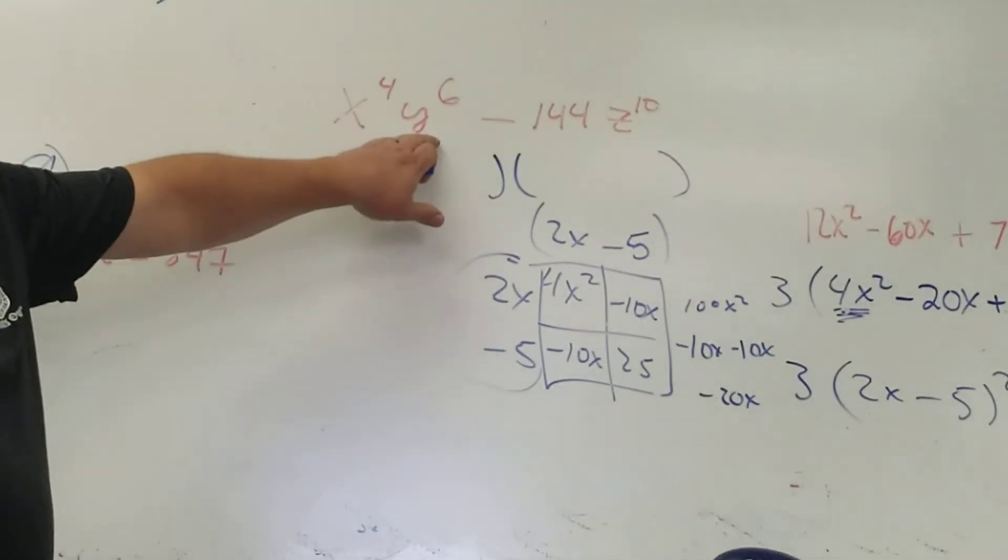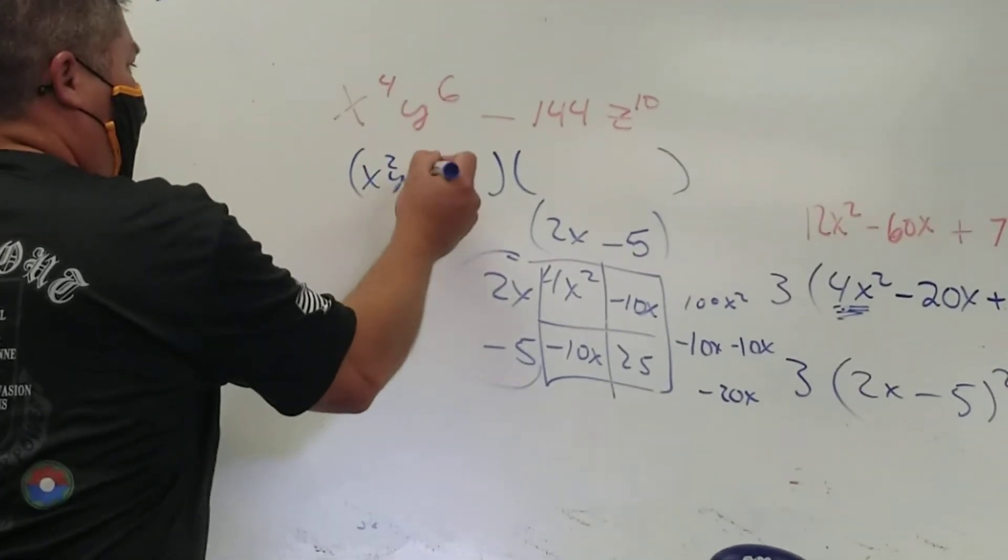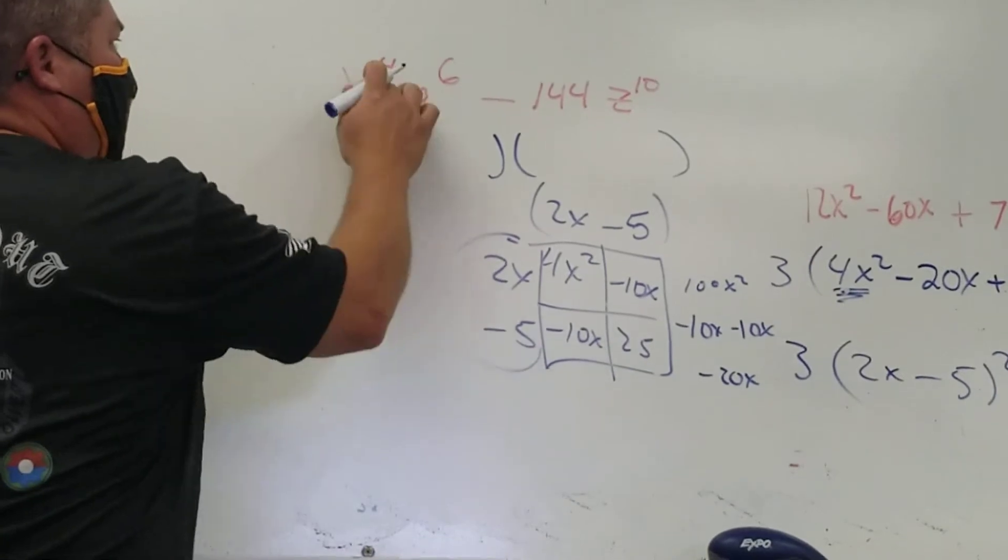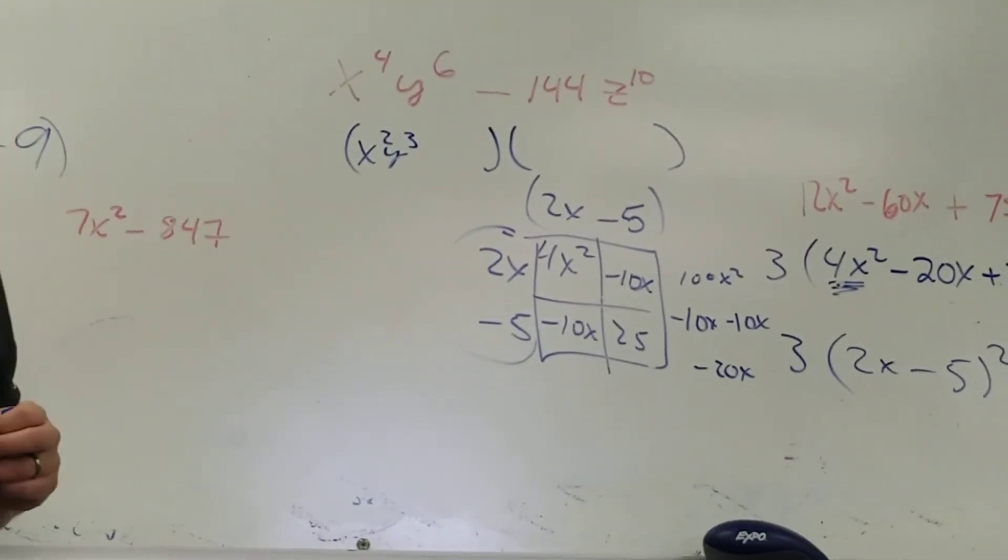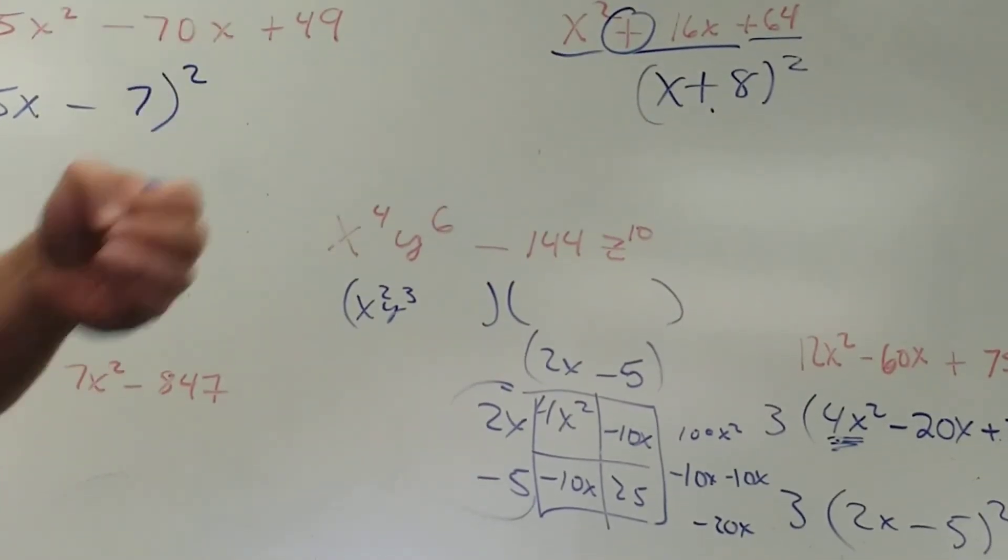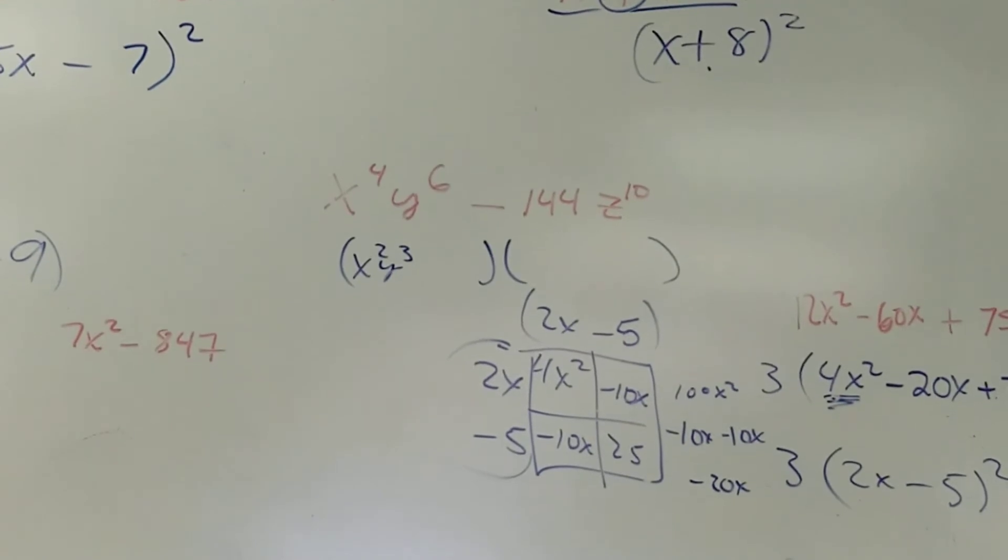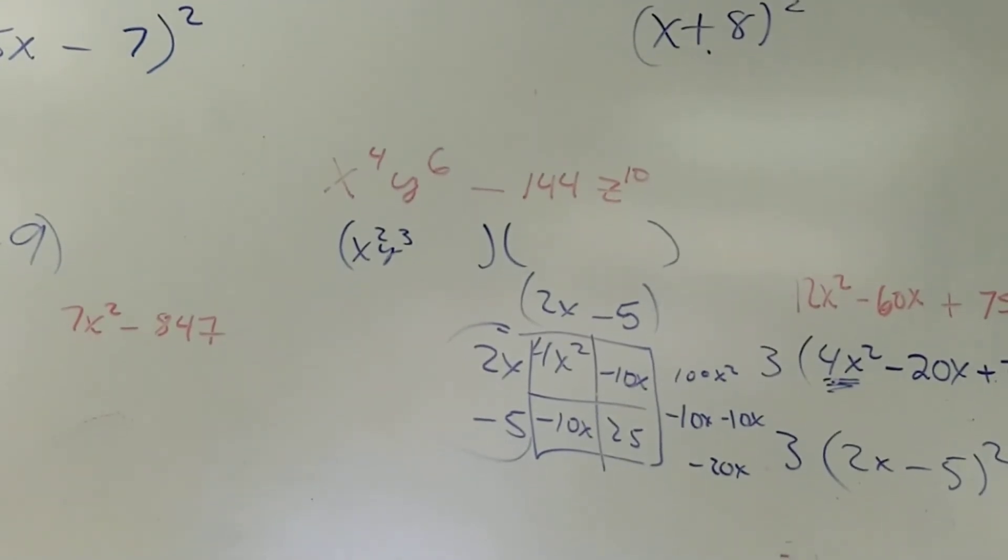All right. So what's the square root of x to the 4th y to the 6th? x squared. x squared. Y what? Y cubed. We're just dividing them by 2. That's something else you might want to write. To take the square root of an exponent, you simply divide the exponent by what? 2. To take the square root of an exponent, you simply divide the exponent by 2.